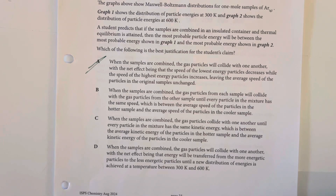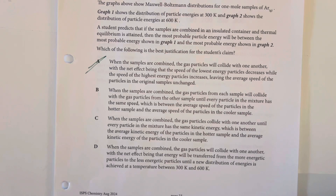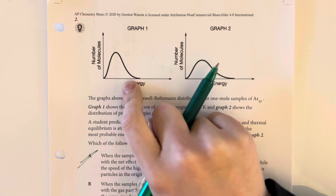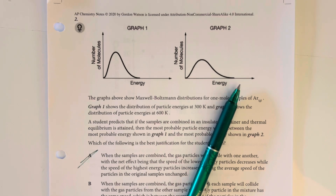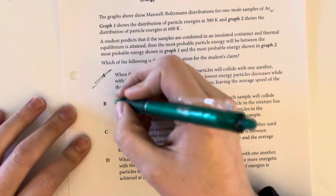Option B says when the samples are combined, the gas particles from each sample will collide with the gas particles from the other sample until every particle in the mixture has the same speed, which is between the average speeds of the particles in the hotter sample and the cooler sample. From the original distribution, we can see that not every single particle has the same speed — we are left with an overall average speed, not everybody having the exact same speed.